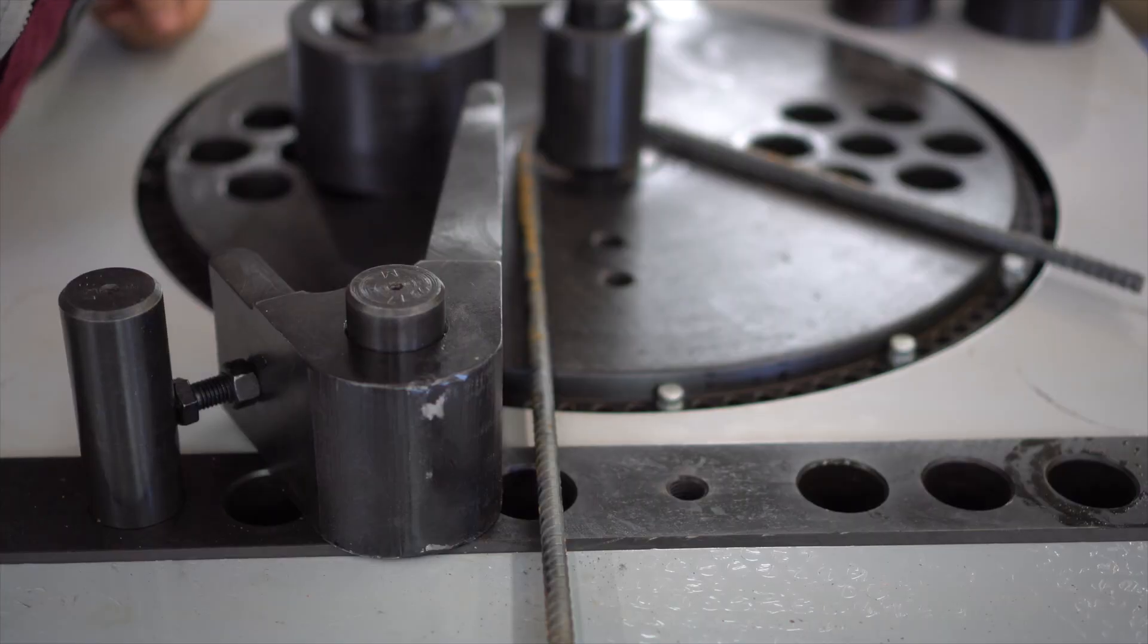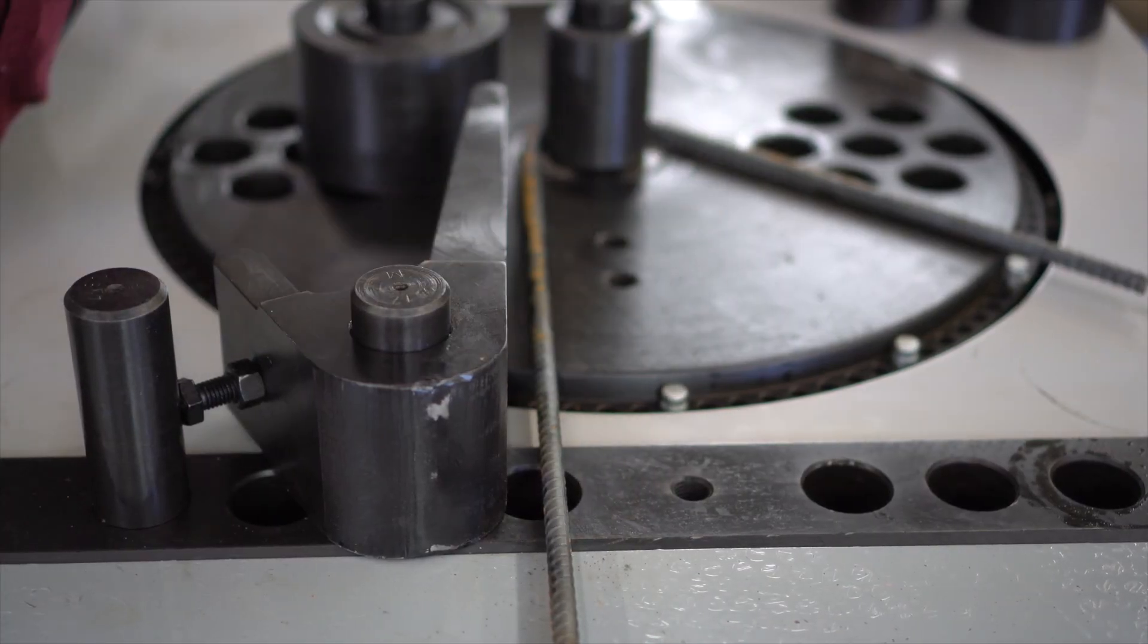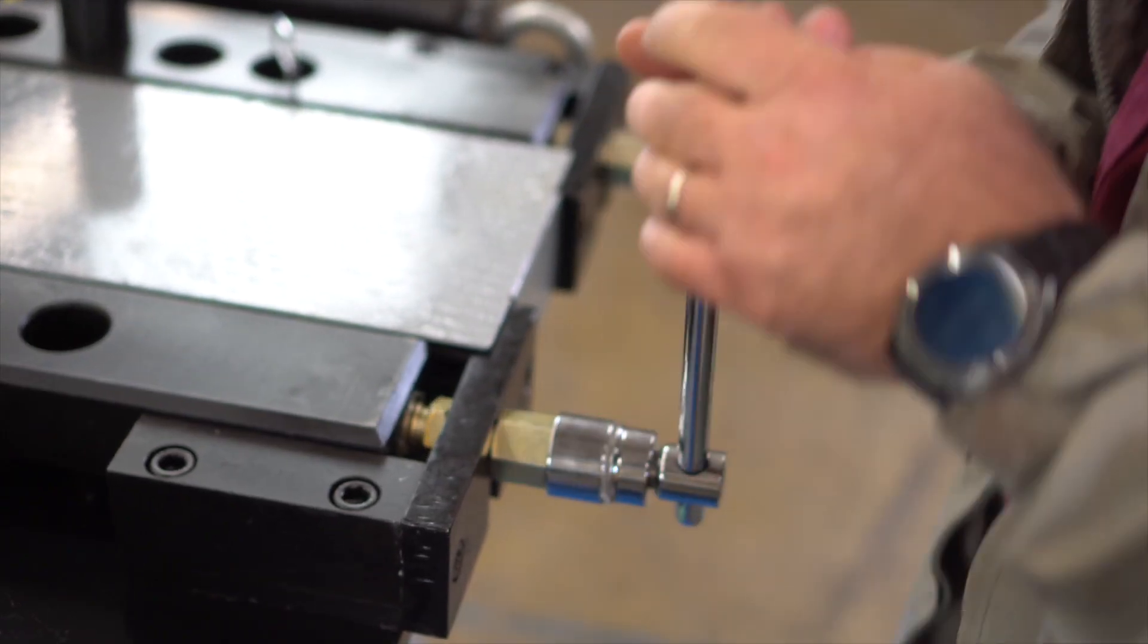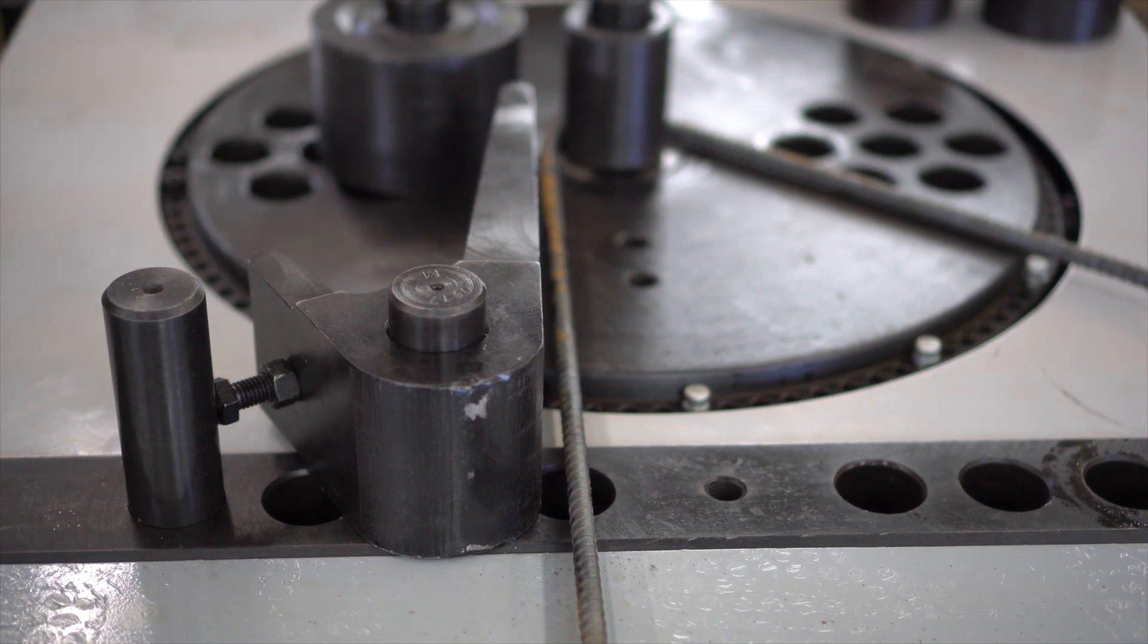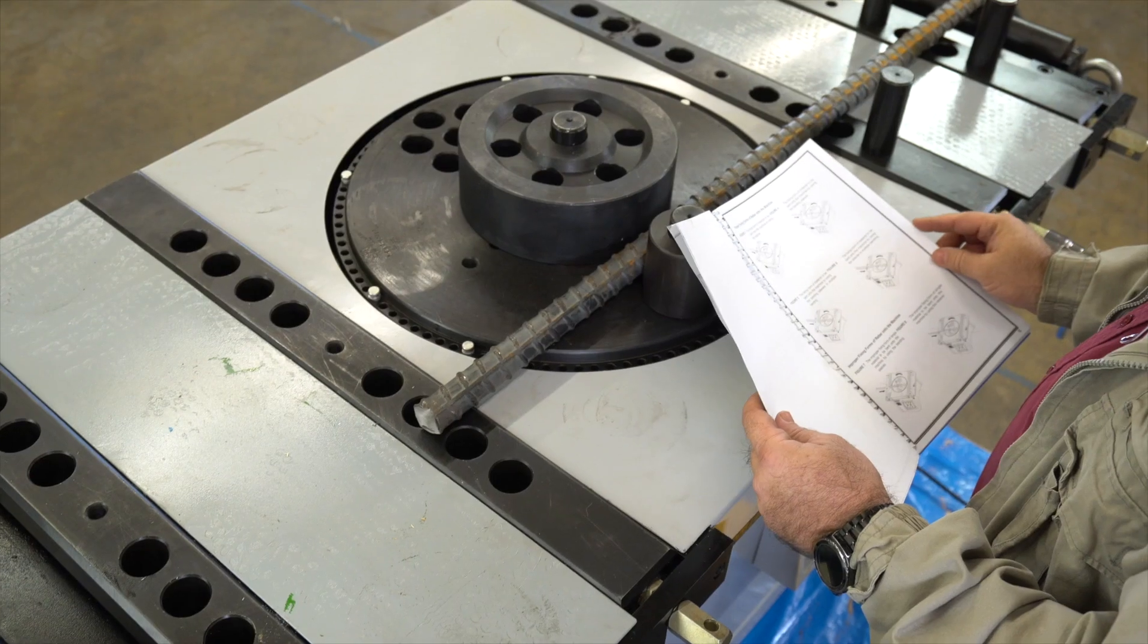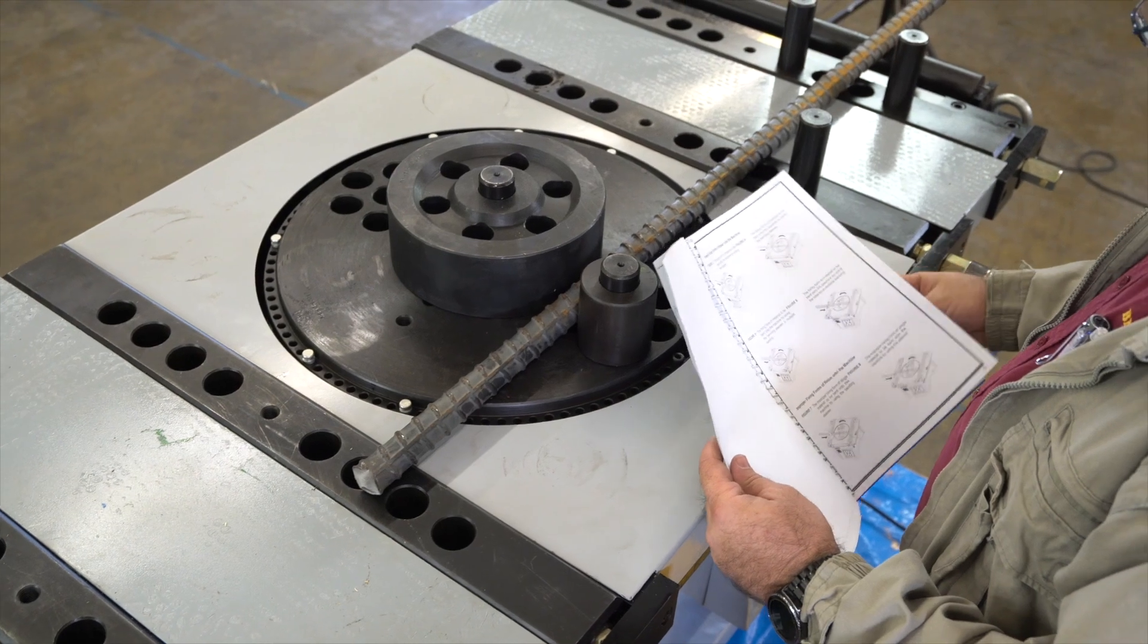Notice the gap between the rebar and the retainer. This is where you can adjust the rail by turning this dial. Be sure to refer to the manual for proper configurations.